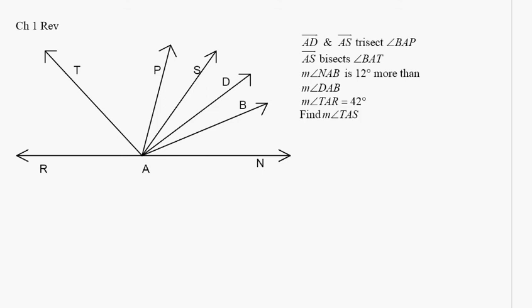AD and AS trisect BAP. BAP. So I'm going to be very careful here to make sure I mark everything correctly. Those are all congruent. AS bisects BAT. BAT. And BS is the bisector. So this whole thing is congruent to this whole thing. Does it look like that's congruent? No, but they're telling me it is.